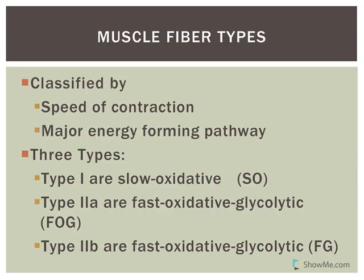Each motor unit contains a certain type of muscle fiber. Motor unit 1 might be all type 1 fibers, motor unit 2 all type 2A. The muscle fiber types in skeletal muscle are classified by the speed of contraction — which comes down to myosin ATPase activity — and by the major pathway used to produce ATP for contraction.